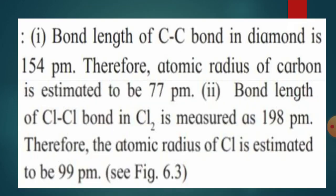For example, in diamond the bond length between carbon and carbon is 154 pm. Divide this value by 2: 154 divided by 2 gives 77. This is nothing but the atomic radius of carbon in diamond, which is 77 pm.